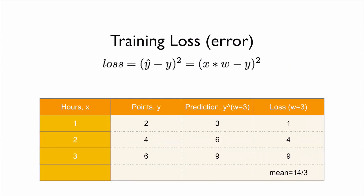More formally, the error — sometimes called the loss — is defined as Ŷ minus Y, squared. We compute the difference and then square it. Ŷ is expressed as X times W, so we can write the loss in this form.